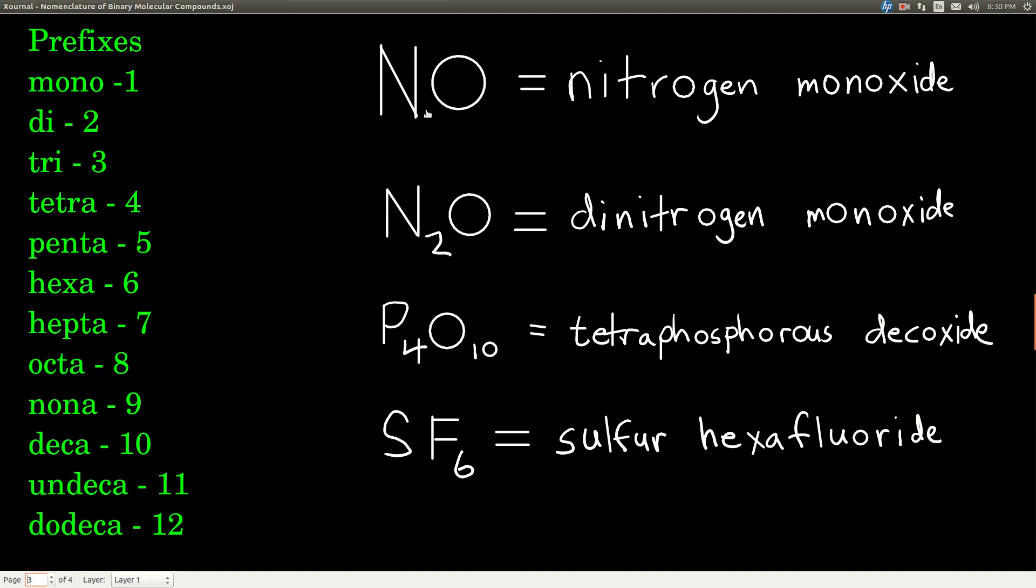So to name this compound right here, both of these elements are non-metals, nitrogen and oxygen. There's one of each. We don't put a mono in front of the nitrogen, but we do the oxygen. So we just say nitrogen monoxide.